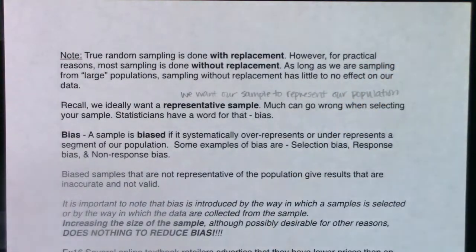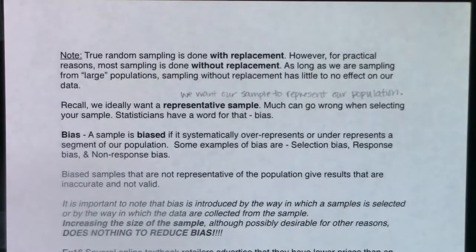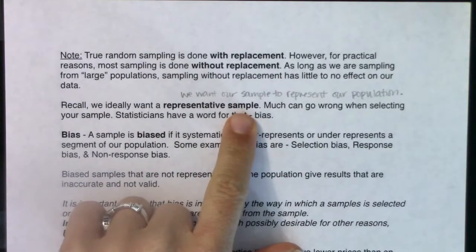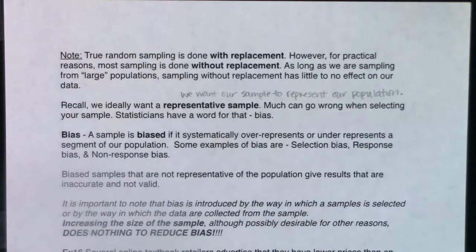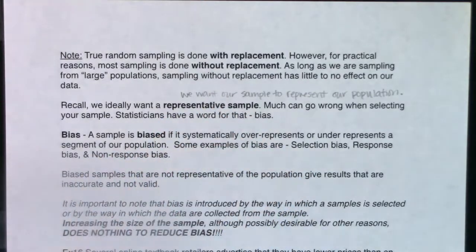The entire idea behind statistics is just to avoid running the census. We don't want to run the census to find the parameter. We want to take a sample, find a statistic, and then generalize that to our population. So we need our sample to represent our population — it should look like your population, just on a smaller scale.